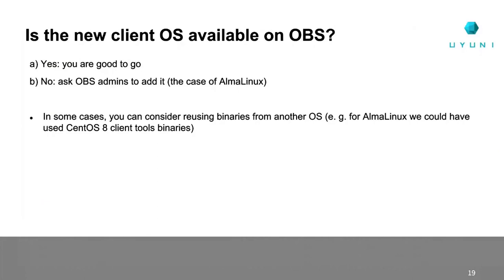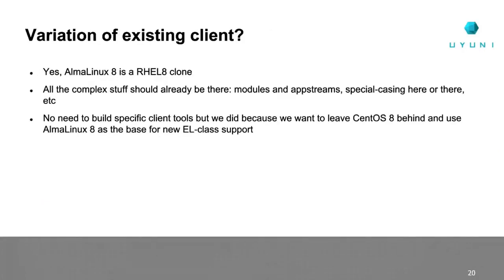Is this a variation of an existing client? In our case yes — AlmaLinux is a RHEL 8 clone, so all the complex stuff like modules and upstream special-casing is already implemented. We didn't need to delve into that. We are going to phase out CentOS 8 client tools and adopt AlmaLinux as the new base for all enterprise Linux class operating systems. Salt only or Salt and traditional — AlmaLinux is officially supported only as a Salt client, but we also implemented traditional stack support in code. The two of us implementing it are not actually developers, so it was actually more difficult to say we won't implement something than to just copy code from other operating systems.